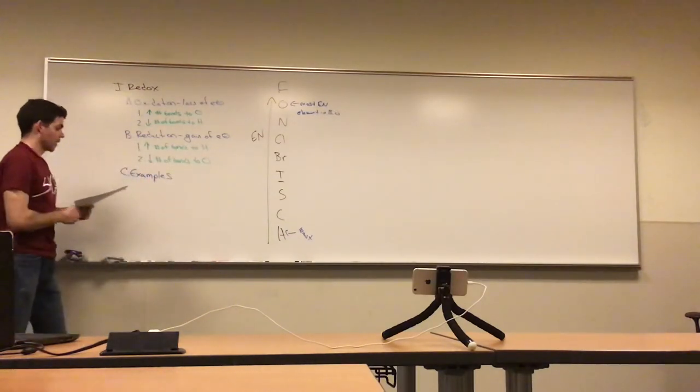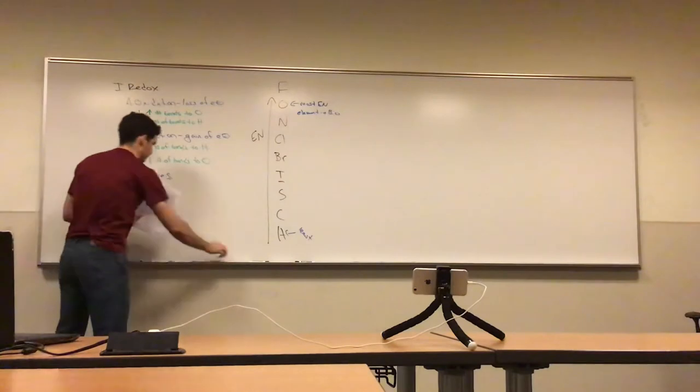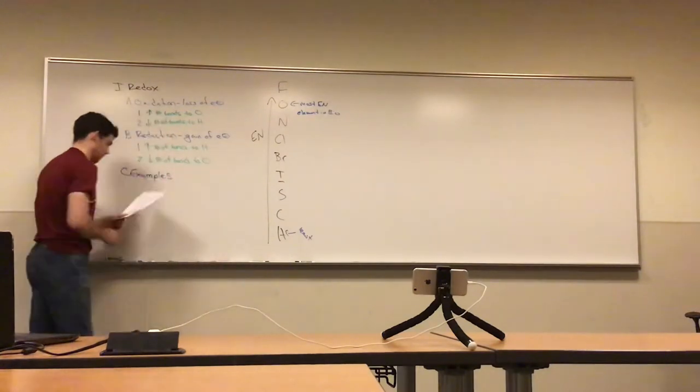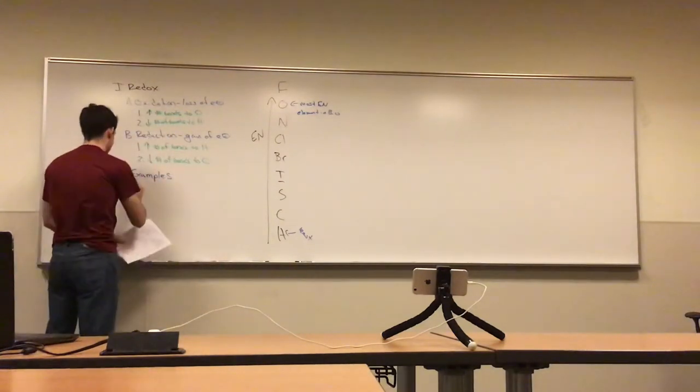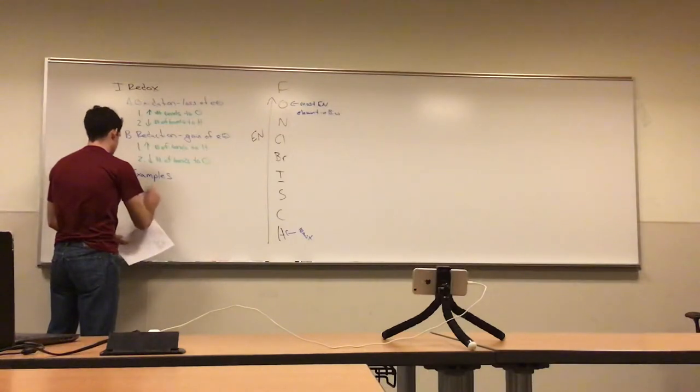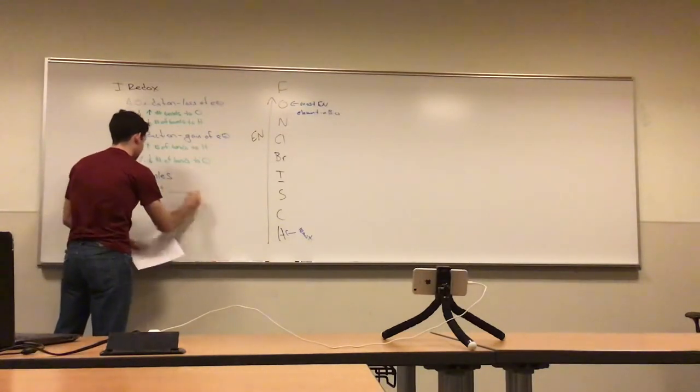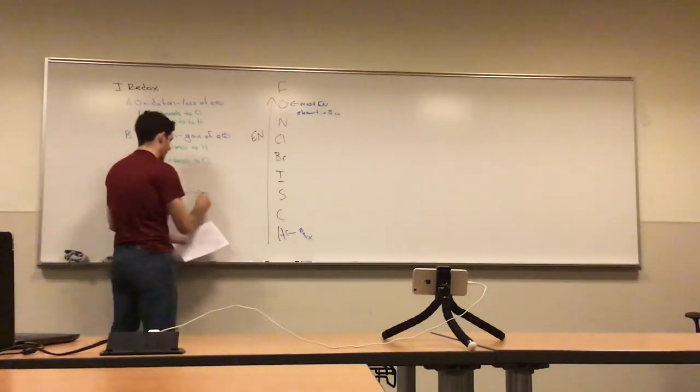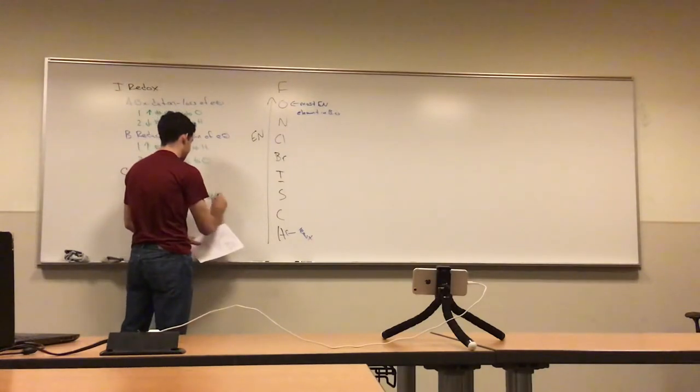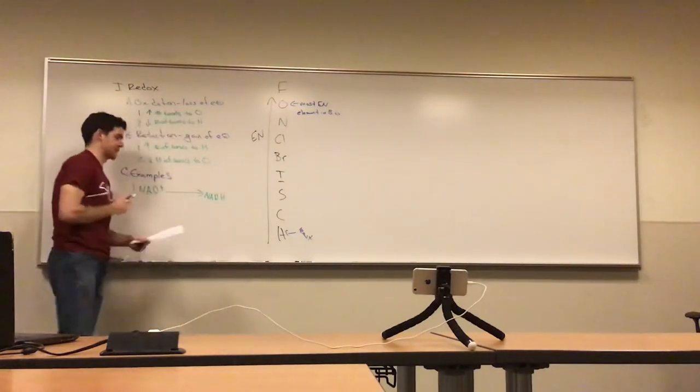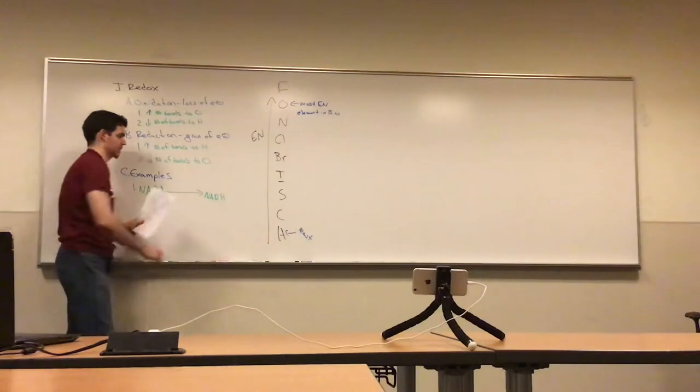Let's look at some examples. First example, let's look at NAD, so we have NAD+ going to NADH. What is that, oxidation or reduction? It's gaining electrons, so that'd be a reduction. So here we have a reduction.